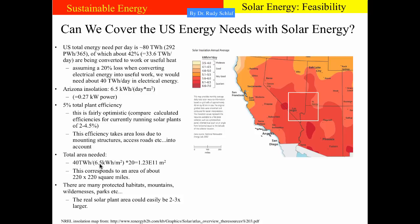40 terawatt hours divided by 6.5 kilowatt hours per square meter gives the number of square meters needed at 100% efficiency. Multiplying by 20 for the 5% efficiency gives 1.23 × 10¹¹ square meters. A little math shows this corresponds to an area of about 220 by 220 square miles. On the map, a square of about 220 by 220 square miles covers more than half of a state. In a realistic scenario, there are many protected habitats, mountains, wildernesses, parks, and populated areas, so the real plant area would be much larger — probably 2 to 3 times larger.